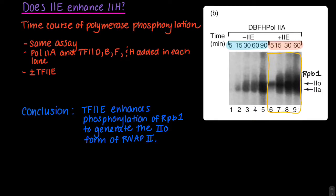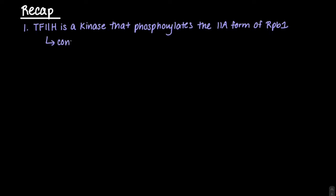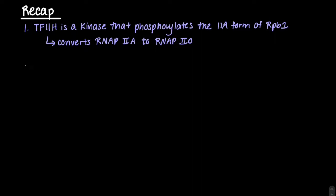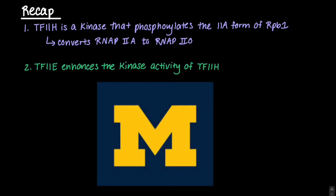For recap, TF2H is a kinase that phosphorylates the 2A form of RPB1. Therefore, it converts RNA polymerase 2A to RNA polymerase 2O. Secondly, TF2E enhances the kinase activity of TF2H. Hope this video was helpful, and forever go blue!